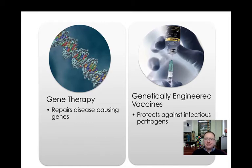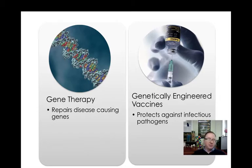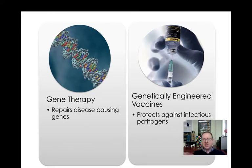Gene therapy is still very experimental — it's not quite ready for widespread use yet. Genetically engineered vaccines, on the other hand, have been used for quite a while now. The big difference between these two is really what they protect us from. Gene therapy repairs disease-causing genes that are already inside of us — genes that for the most part we were born with — that we aim to repair through gene therapy. Genetically engineered vaccines are used to protect against infectious pathogens, such as viruses or bacteria, which cause infections in us. Both involve the tools of biotechnology but approach protection differently: gene therapy repairs damaged disease genes, whereas the vaccine stimulates our immune system to protect us against an external threat.